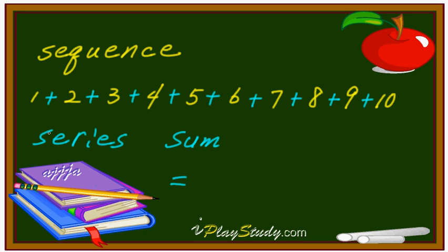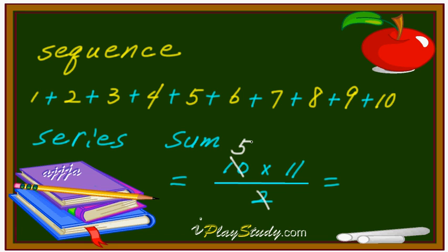Here's the trick: for one through ten, or one through one hundred, or one through twenty — whatever the last number is — take that last number (ten), times the next number (eleven), divided by two. That's it! Ten divided by two is five, and five times eleven is fifty-five. So one through ten, the total is fifty-five.